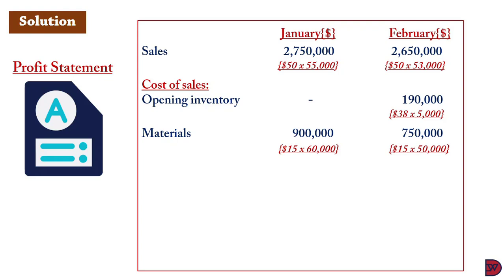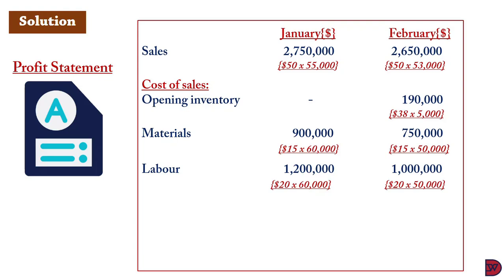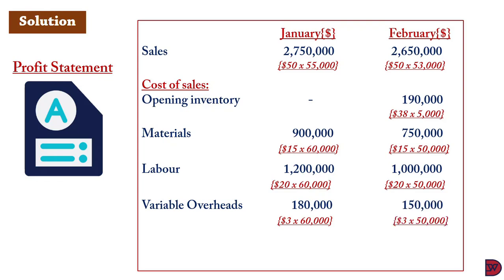Materials for February: 50,000 units × $15 = $750,000. For labor: January is $1,200,000 (60,000 × $20) and February is $1,000,000 (50,000 × $20). For variable production overheads at $3 per unit: January is $180,000 (60,000 × $3) and February is $150,000 (50,000 × $3).